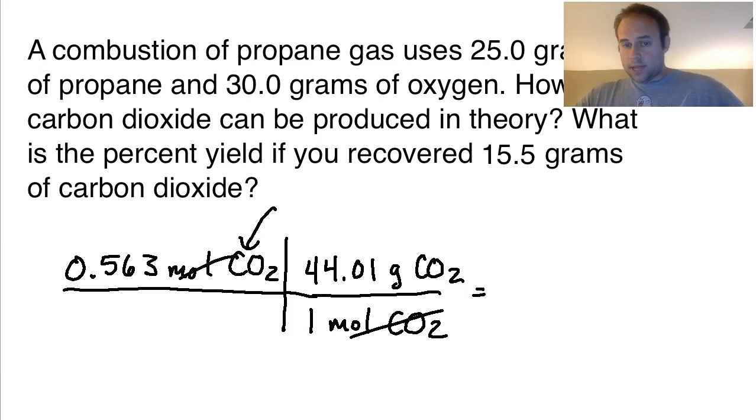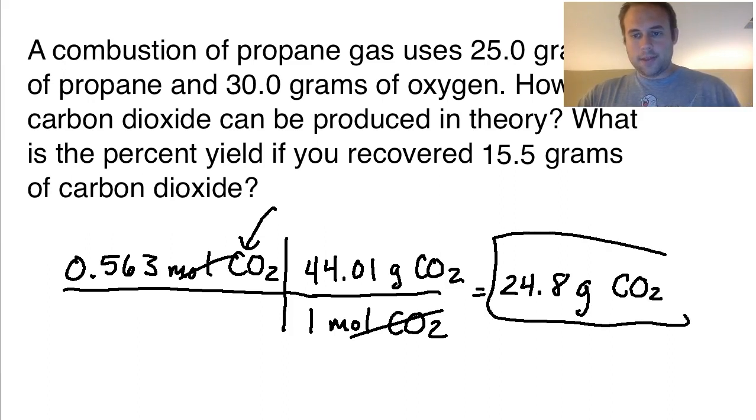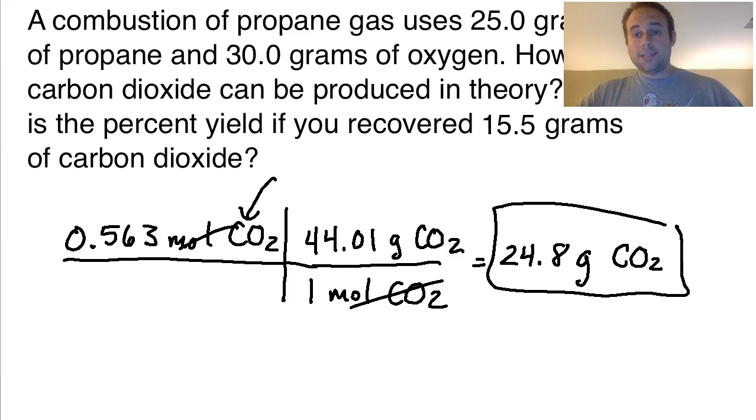Now if I multiply these together, I get 24.8 grams of CO2. So this is the CO2 that I could produce in theory. This is called the theoretical yield. So if the reaction went to plan and everything worked 100% the way it should, 100% yield would be 24.8 grams of CO2.